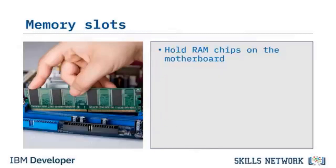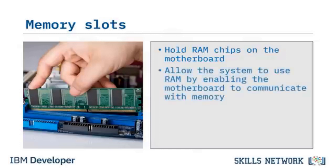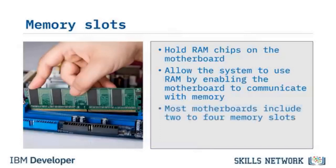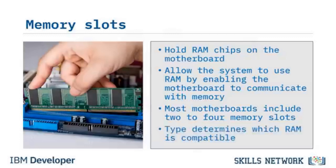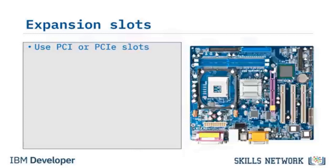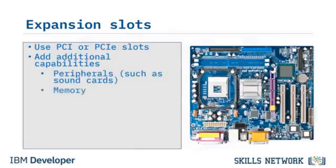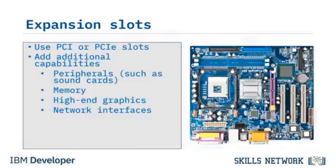A memory slot holds a RAM stick in place on a computer's motherboard. Only memory chips can fit into these dedicated slots. Memory slots allow the system to use RAM by enabling the motherboard to communicate with memory. Depending on the motherboard, there will be two to four memory slots, sometimes more on high-end motherboards. Older machines used PCI expansion slots; newer motherboards use PCI Express or PCIe. These slots hold expansion cards that provide additional features such as enhanced sound, memory, high-end graphics, and network interfaces.